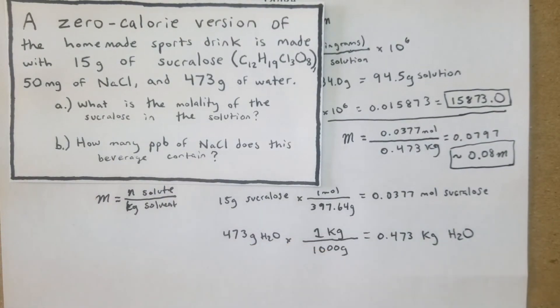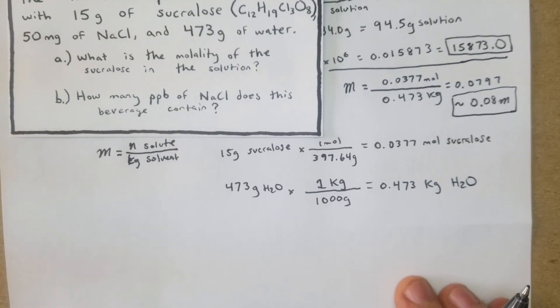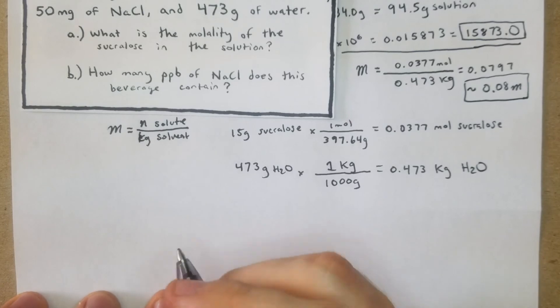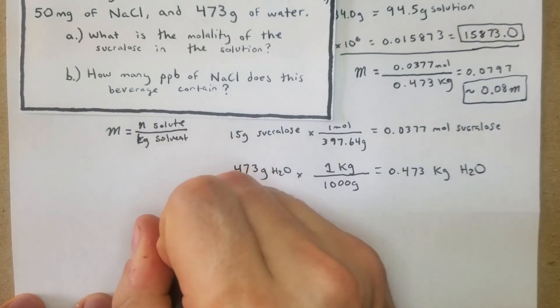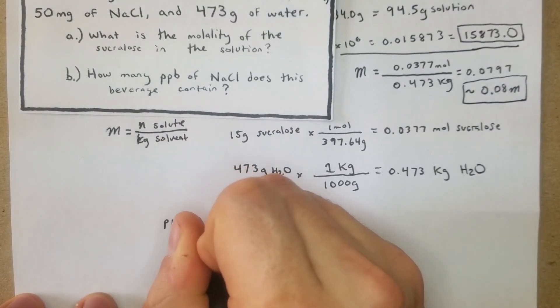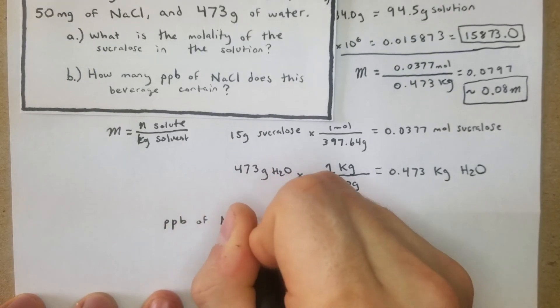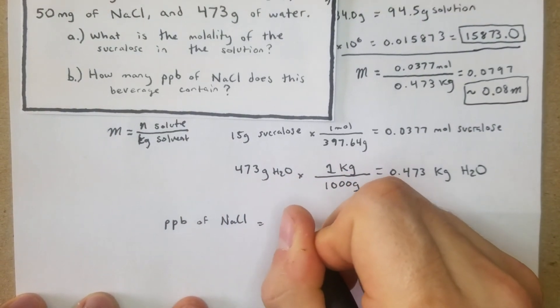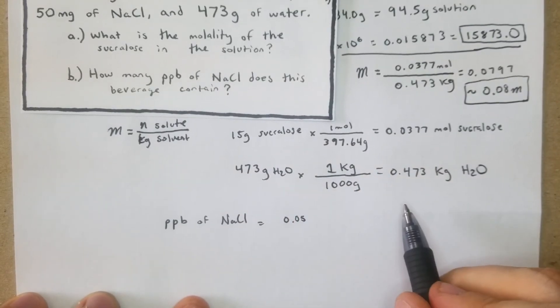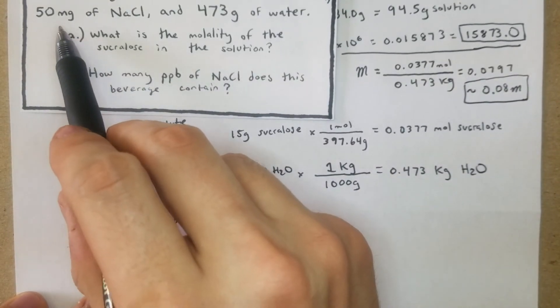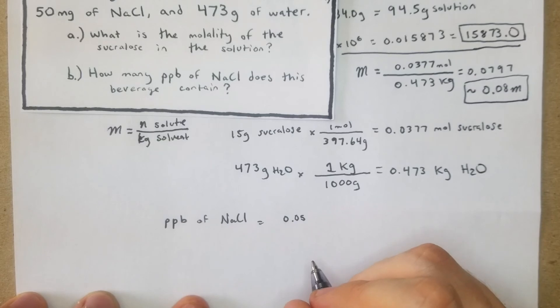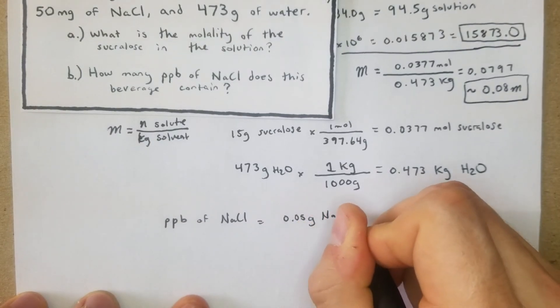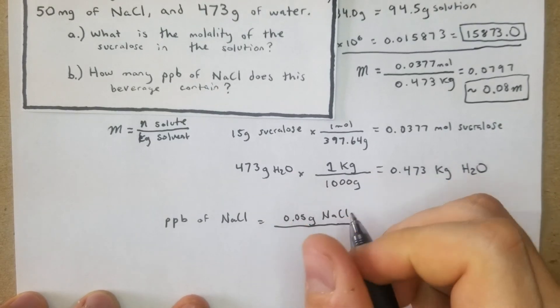For part b, how many ppb of NaCl does this beverage contain? PPB parts per billion of NaCl equals 0.05 grams - because we have 50 milligrams converted to grams - of NaCl divided by the total mass of solution.